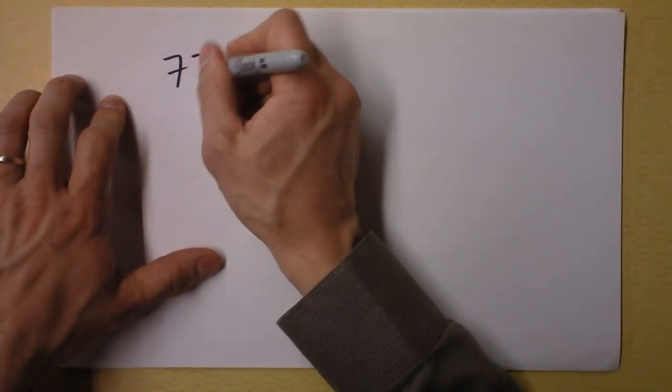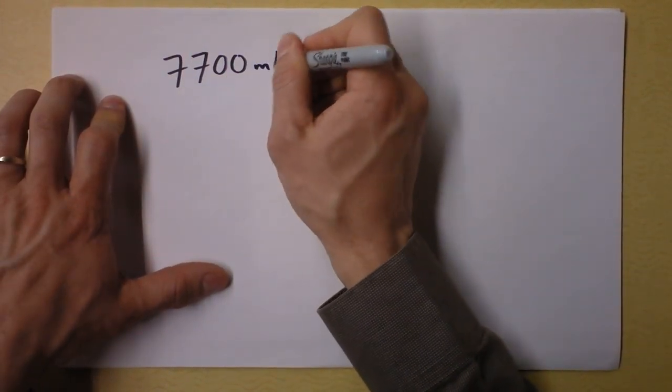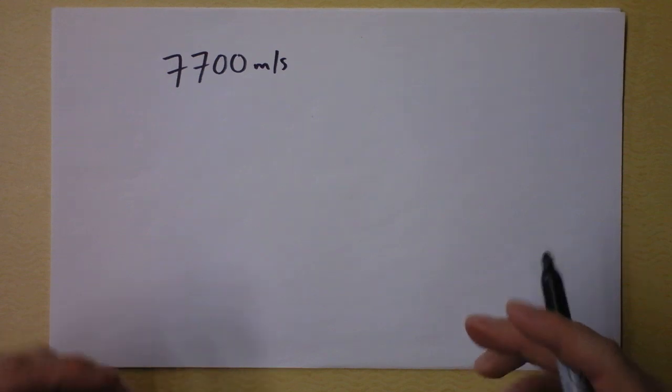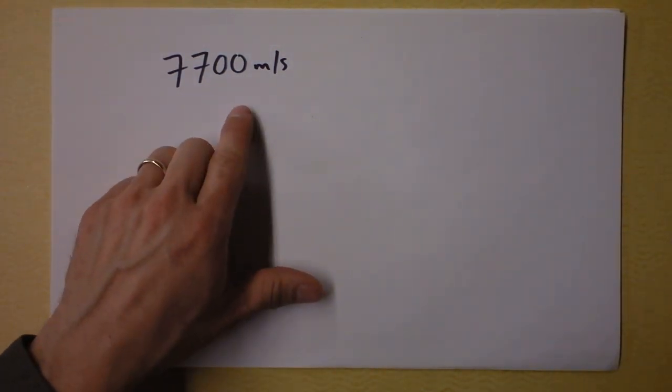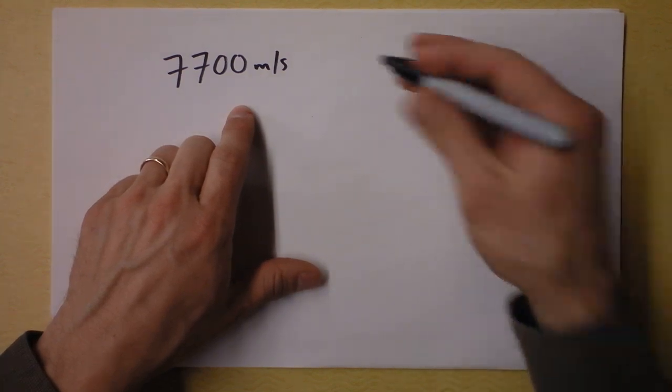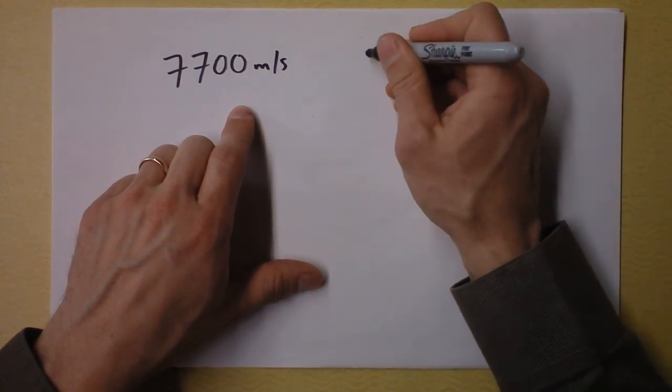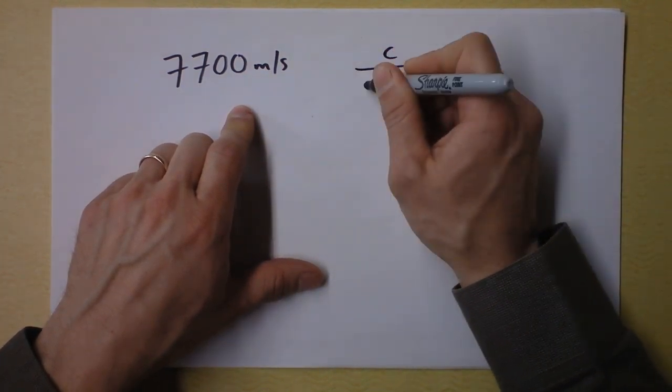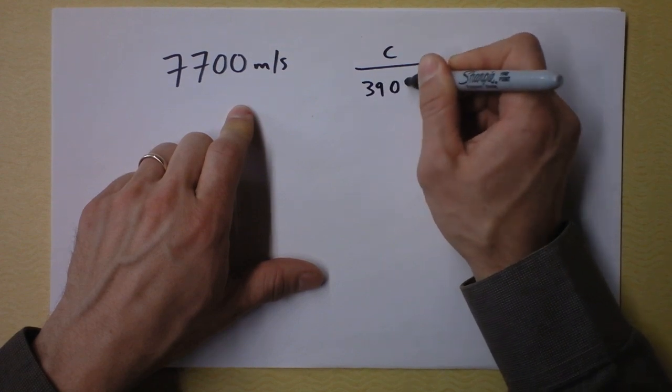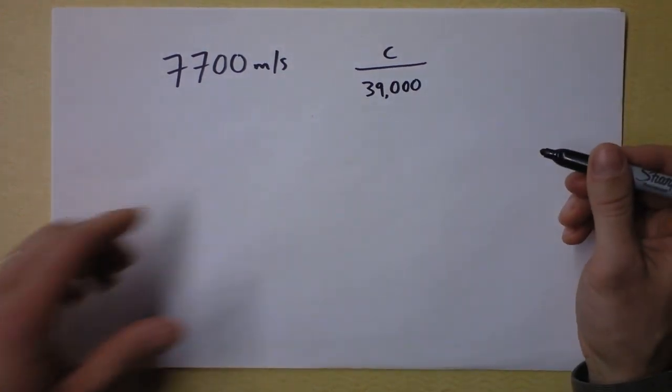Wow, that's really fast, right? Which is, I don't know, 17,000 miles an hour? That's pretty fast. Okay, but what about as a fraction of the speed of light? Turns out that the Space Shuttle is going the speed of light divided by 39,000.